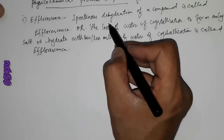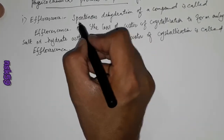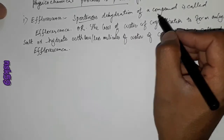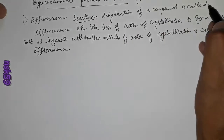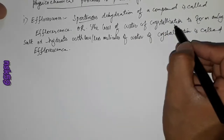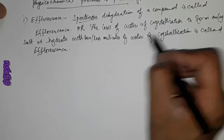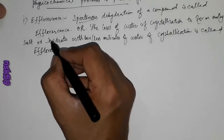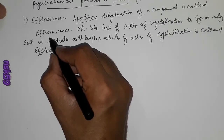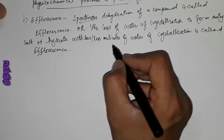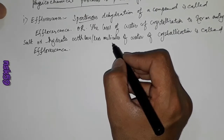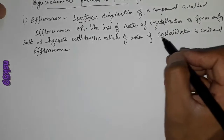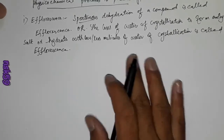Spontaneous means continuous dehydration — dehydration means the loss of water of a compound. The loss of water of crystallization to form an anhydrous salt, or a salt with fewer molecules of water of crystallization than the original one, is called efflorescence.